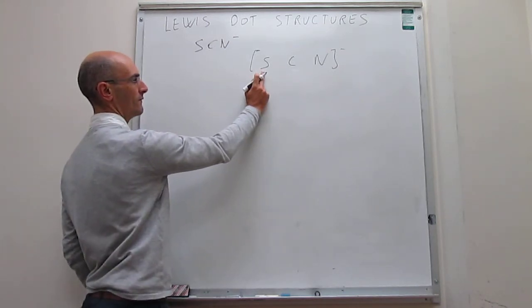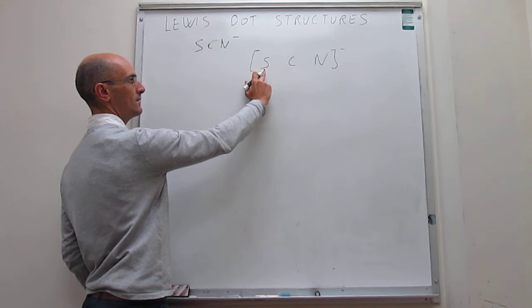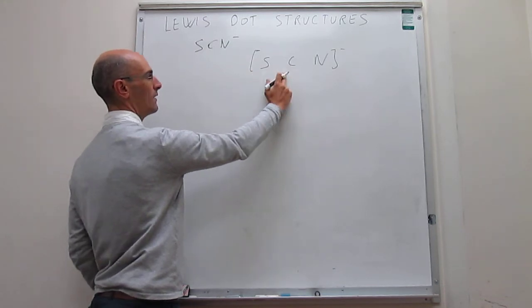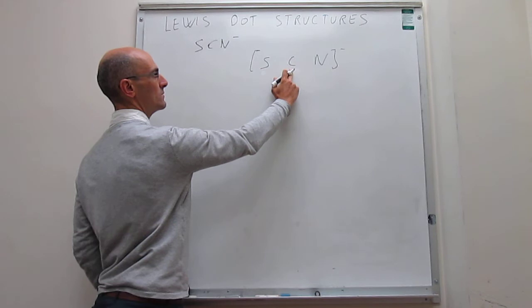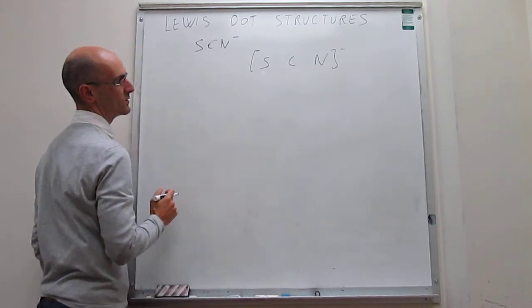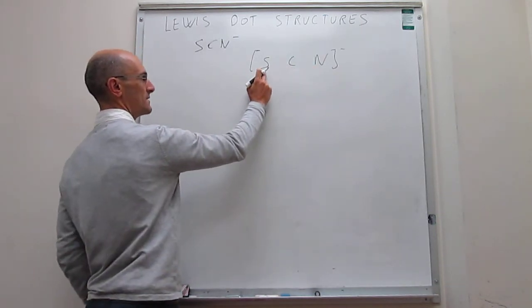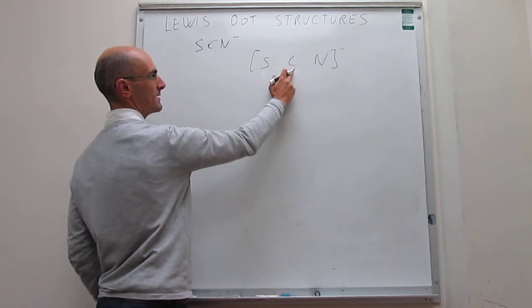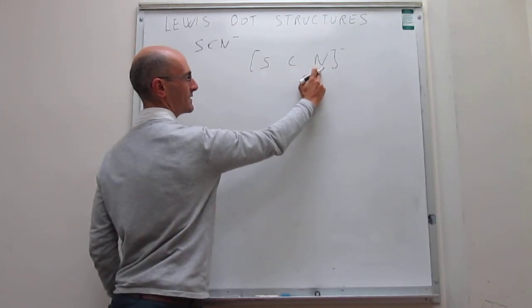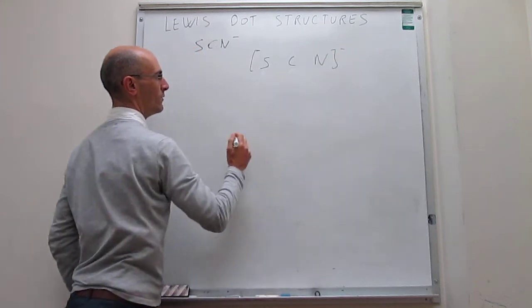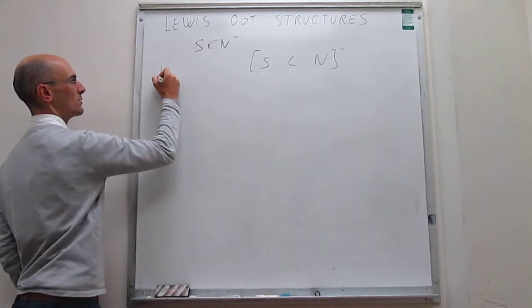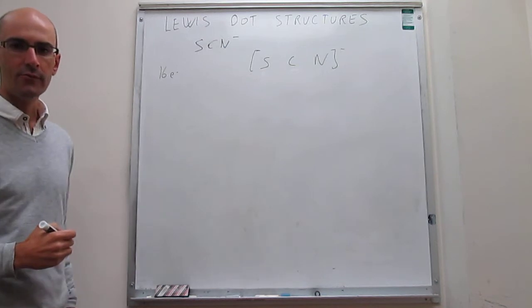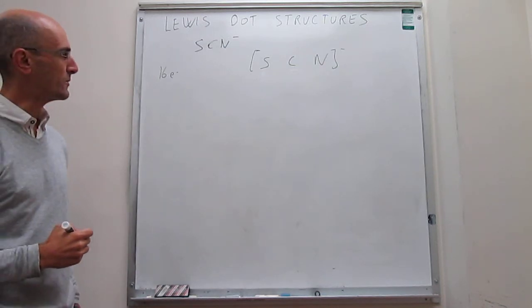The electronic configuration of sulfur is neon 3s² 3p⁴, that of carbon is helium 2s² 2p², and nitrogen is helium 2s² 2p³. So we have six valence electrons, plus four, that's ten, plus five, that's fifteen, and then one more for the charge — that's a total of 16 valence electrons that we have to build the Lewis dot structure with.